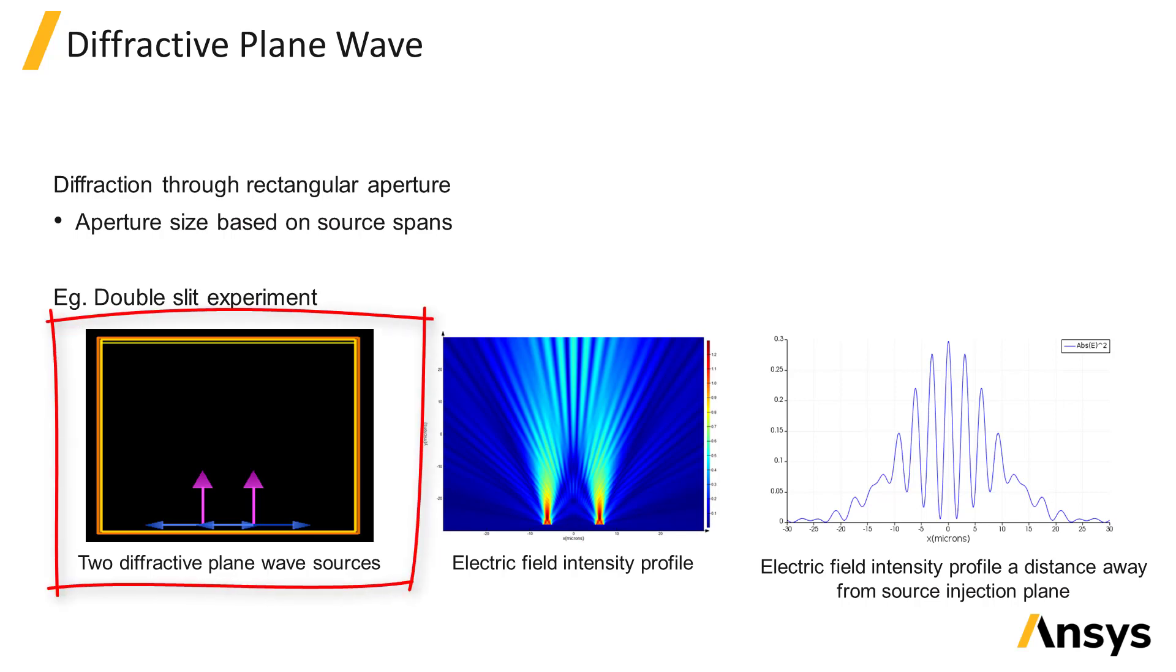As you see in the image on the left, we used two diffracting plane wave sources to represent the light passing through the two apertures.